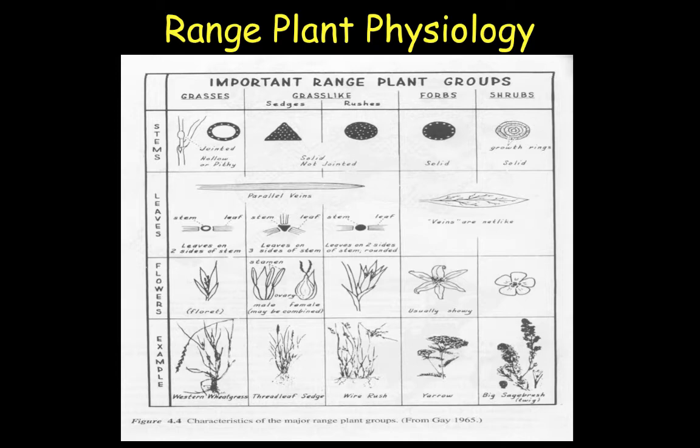And then our forbs, which you can start to see now all throughout the Sacramento Valley, are going to be our plants that have some sort of flower associated with them. California is really notorious for having some beautiful forbs. And if you get a chance to get up to Table Mountain, I highly recommend it, because there are lots of native forbs up there that bloom and it's very pretty.